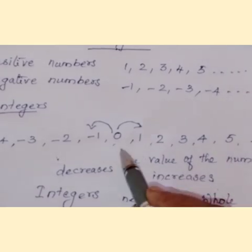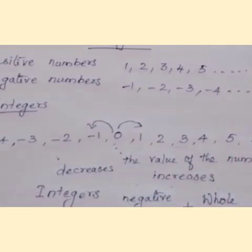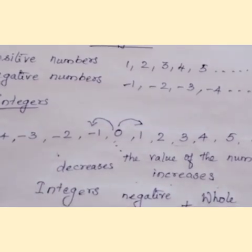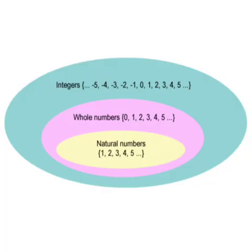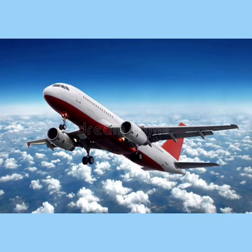So integers have negative numbers and then whole numbers. I hope this will help you to understand more clearly. In the picture, the innermost oval has natural numbers, that is 1, 2, 3 up to infinity. Then whole numbers, 0 plus natural numbers. Then integers have negative numbers and then whole numbers.